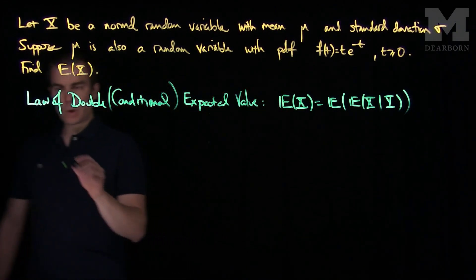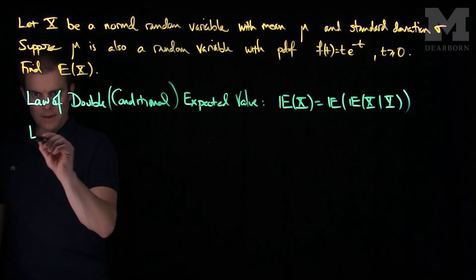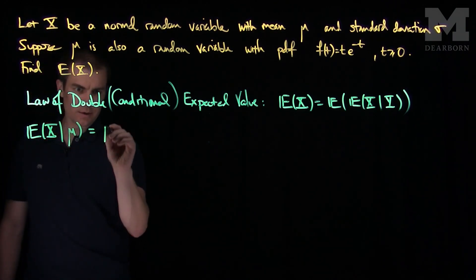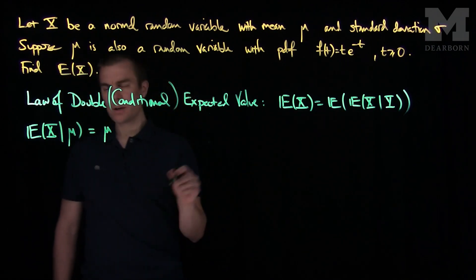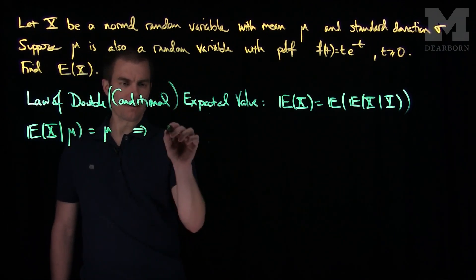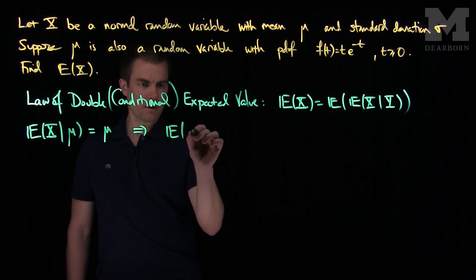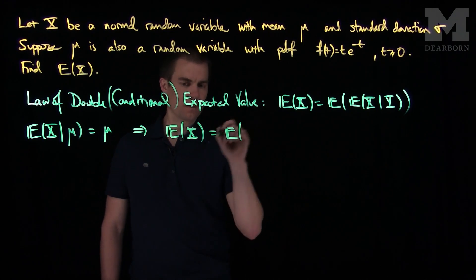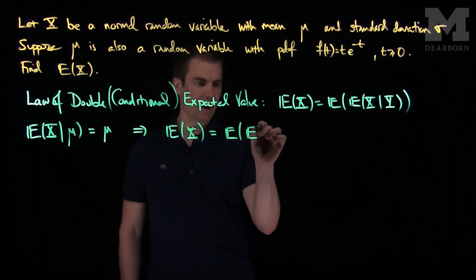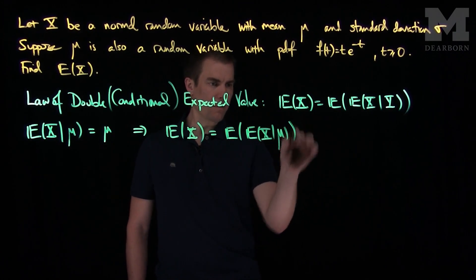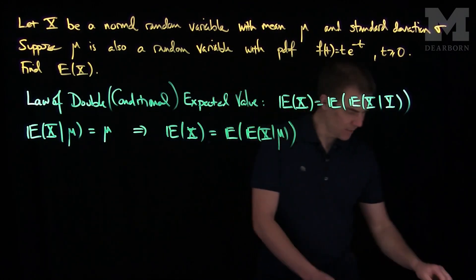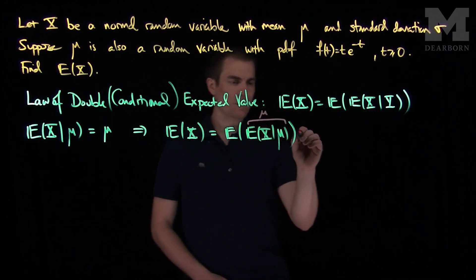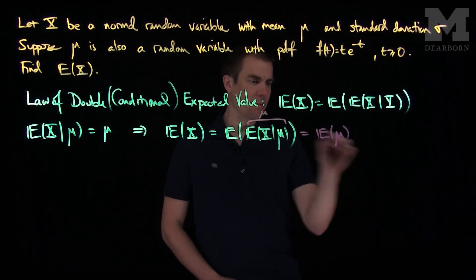And so in this problem we know that the expected value of X given μ is μ. So to compute the expected value of X we will write this as the expected value of the conditional expected value of X given μ. And now we know that this is just μ because this is a normal random variable. So this is the expected value of the random variable μ.